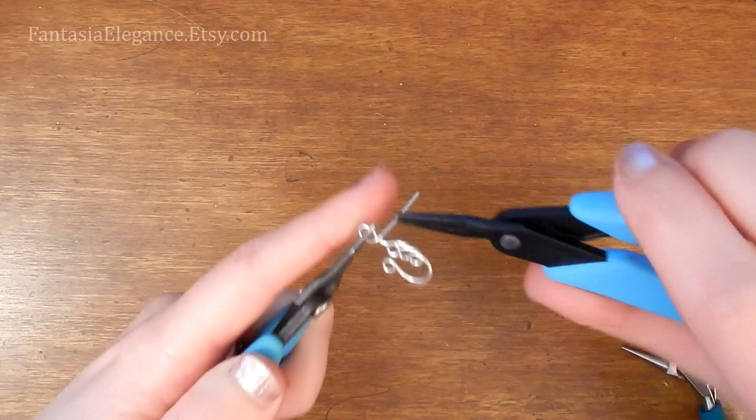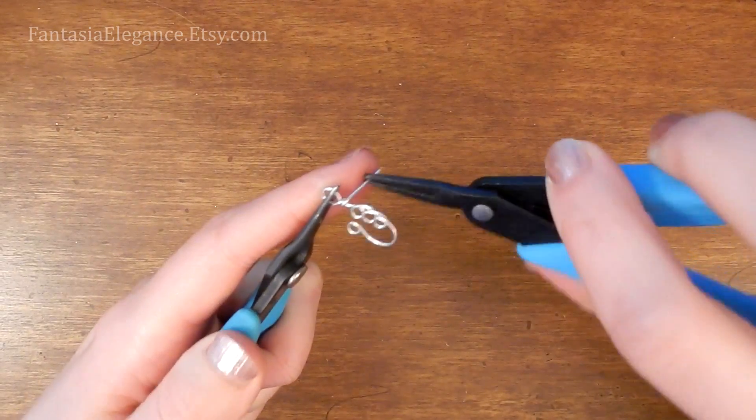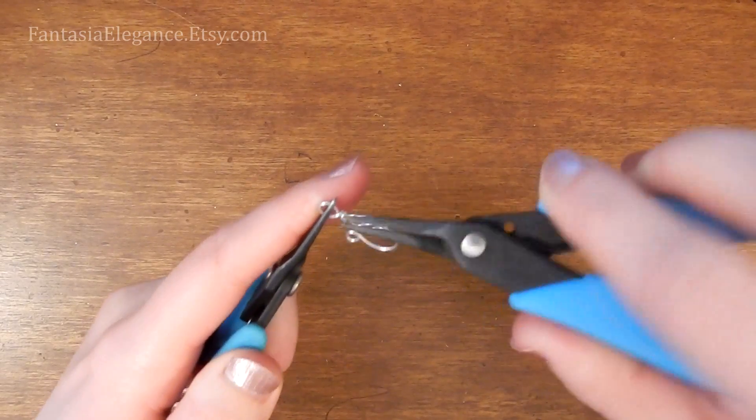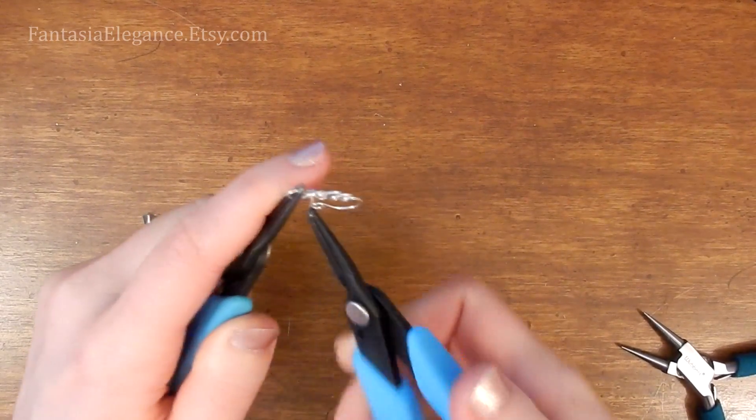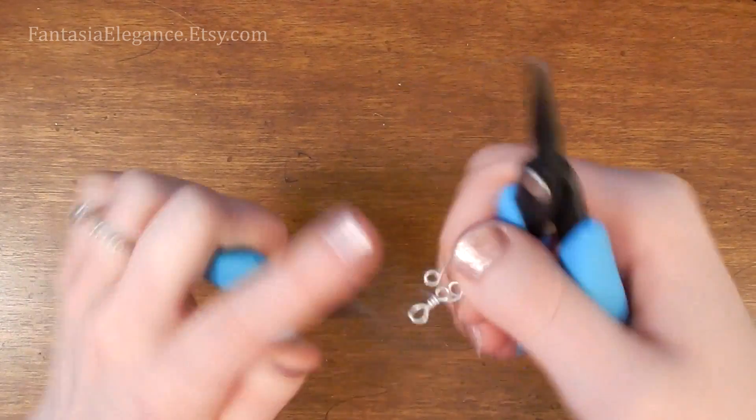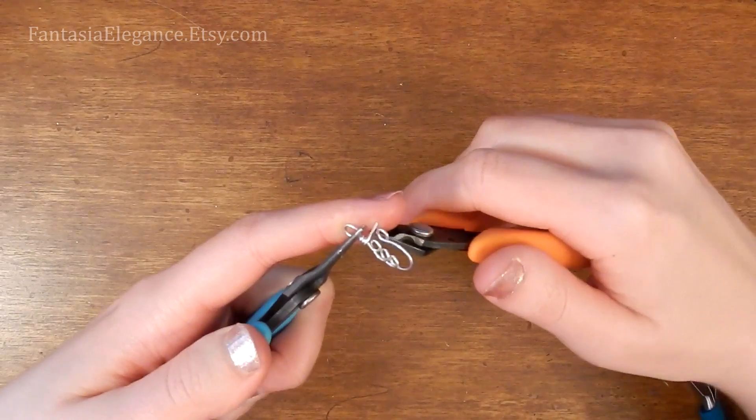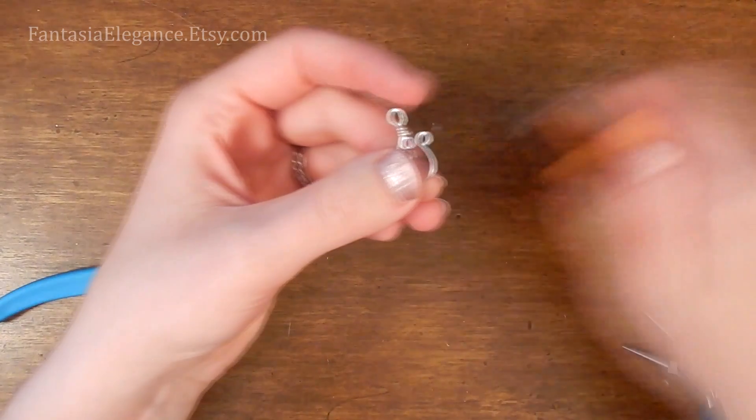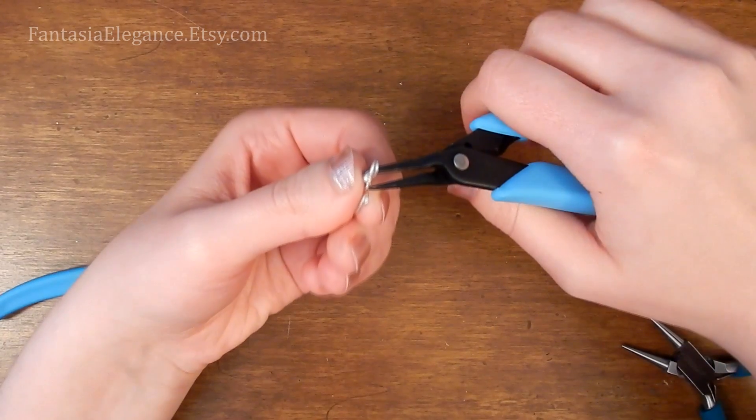And finally, we will just wrap this tail once again around the base portion. And I find this easiest with two pairs of chain nose pliers. And I like to give it a good three or four wraps around the bottom there. And, of course, snipping off our excess and tightening down that little loose end.